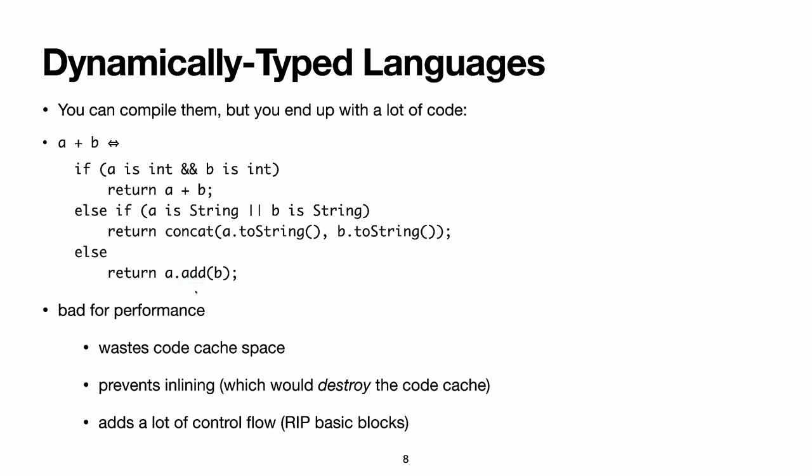This is all very bad for performance. First of all, it's a lot of code, which takes precious code cache space, meaning we'll have more code cache misses, meaning worse performance. You can't inline much, because if you do, then you really kill your code cache. And this adds a lot of control flows, so conditionals, all over the place, which prevents you from having nicely optimizable basic blocks. Every instruction can be reached in so many different ways that it's hard to make any assumption at all.